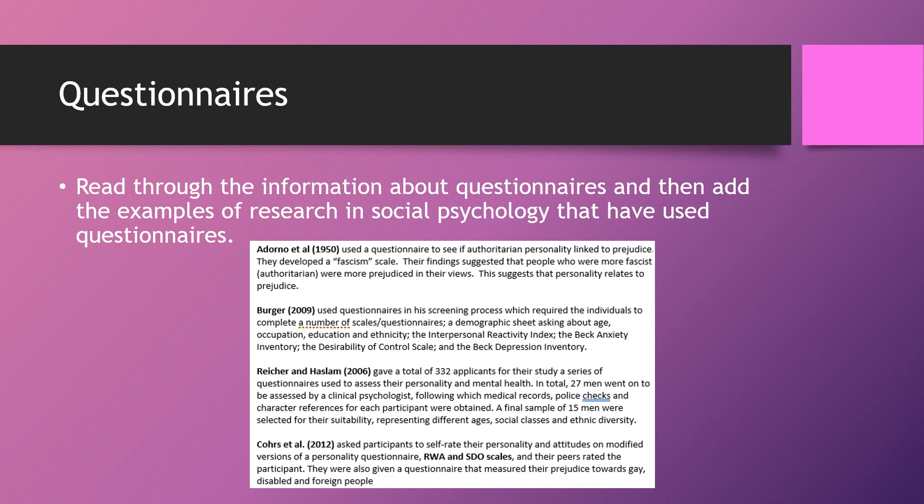Questionnaires gather both quantitative and qualitative data if you use open and closed questions. When evaluating the use of questionnaires in social psychology, you need to connect that clearly to examples where questionnaires have been used. At the bottom of page 73, you can see four main studies where questionnaires were used: Adorno, Berger, Riker and Haslam, and Cause. Pause the video, make a note of the detailed information on their use of questionnaires on page 73, then restart.